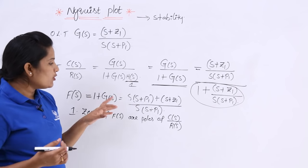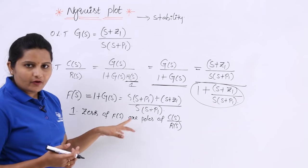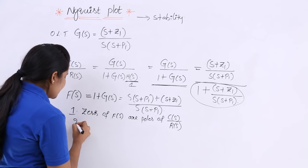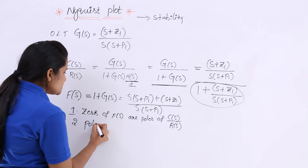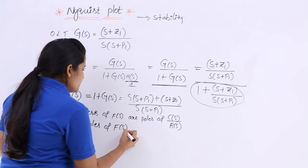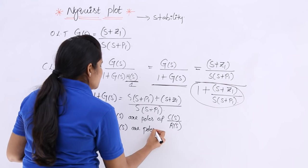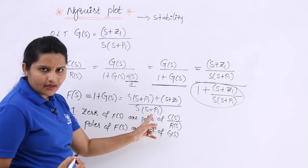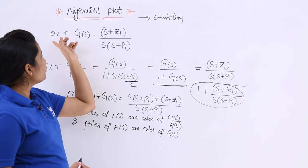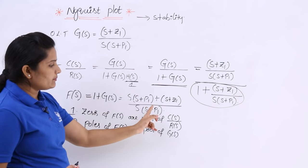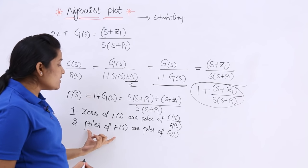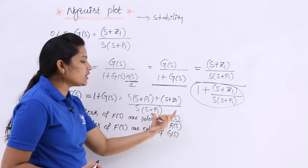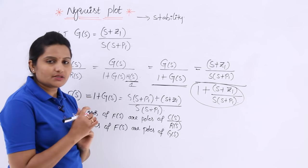The second key point is that the poles of F(s) are equal to the poles of G(s). If you observe the poles of F(s) and the poles of the open loop transfer function G(s), these two are the same. So poles of F(s) are the poles of G(s), and zeros of F(s) are the poles of the closed loop transfer function C(s)/R(s).